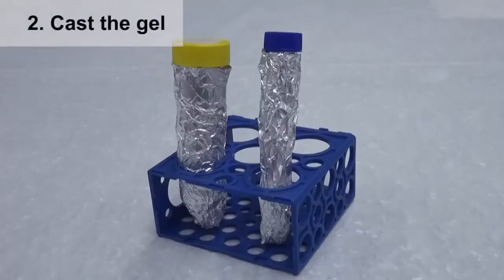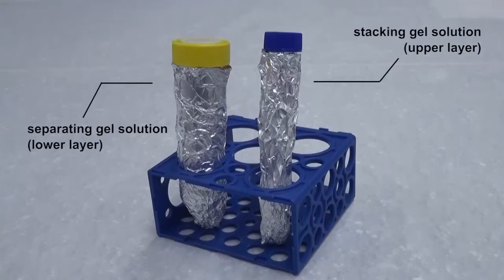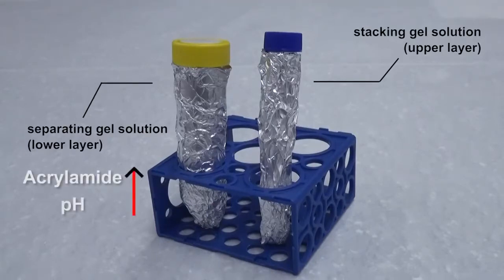The gel used in this experiment has two layers. The composition and pH are different for the upper and lower layers. Hence its name, discontinuous gel electrophoresis system. The lower layer has a higher acrylamide concentration and pH value than the upper layer. Do not switch them.